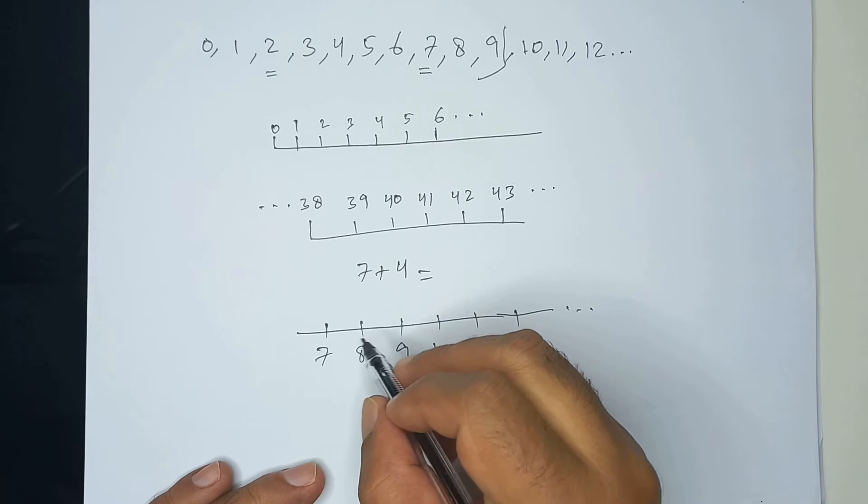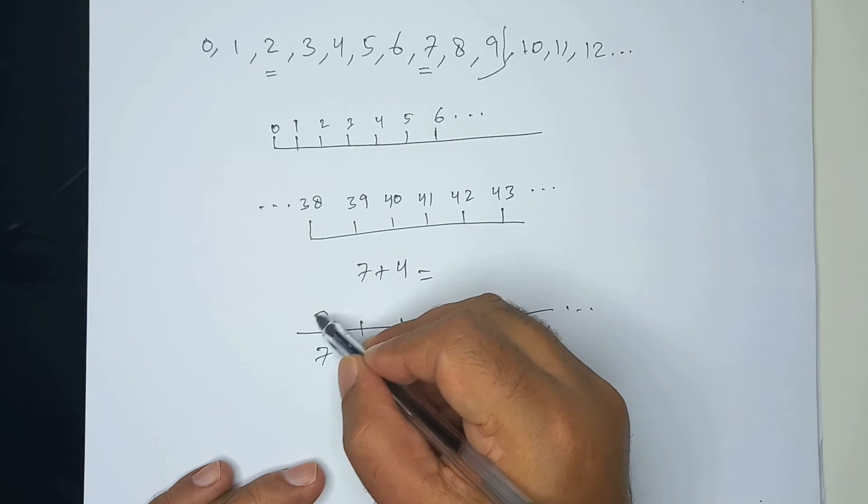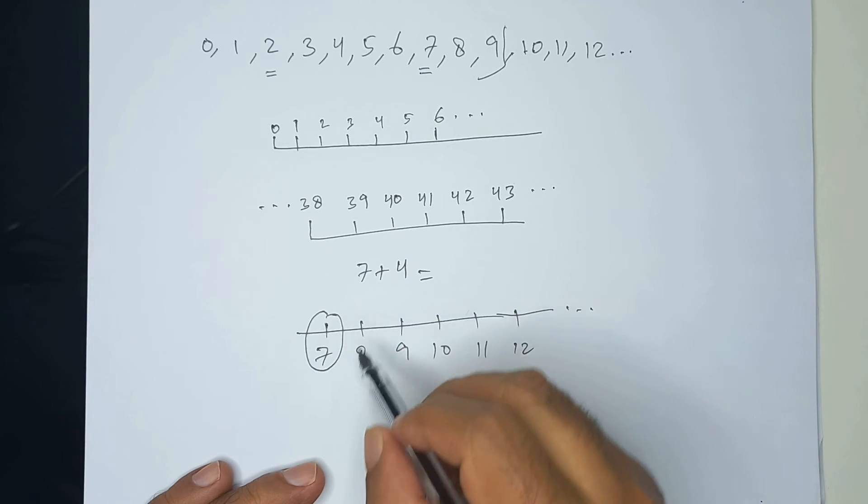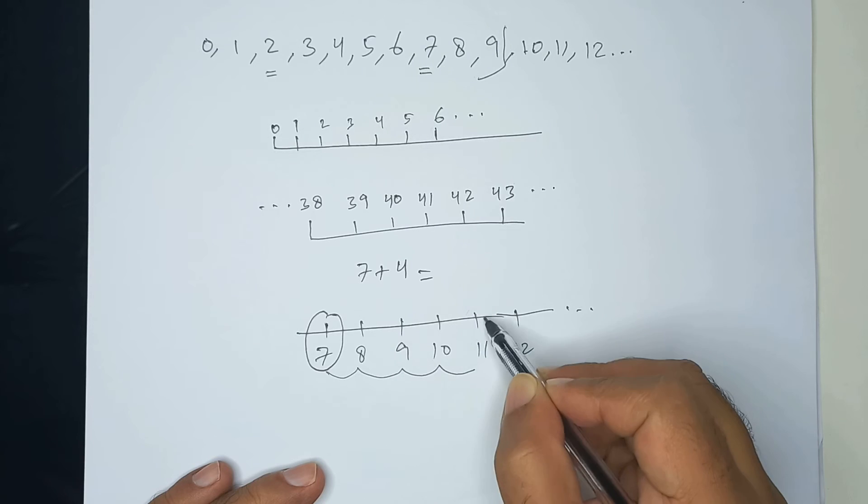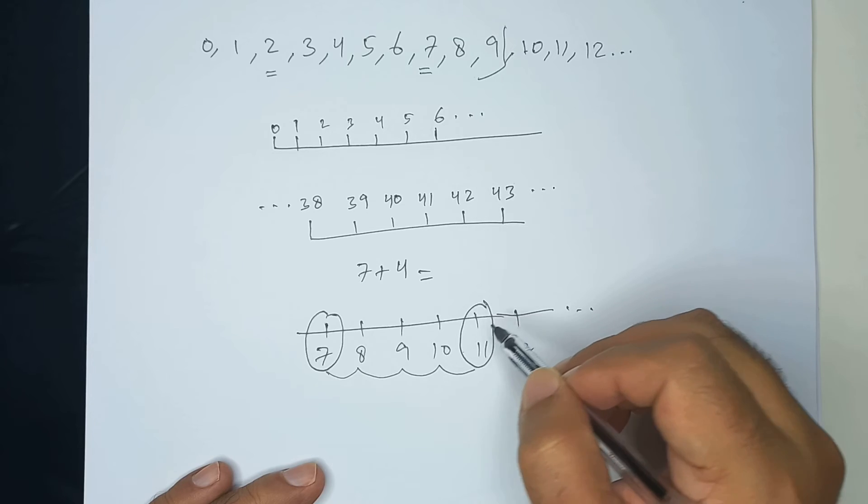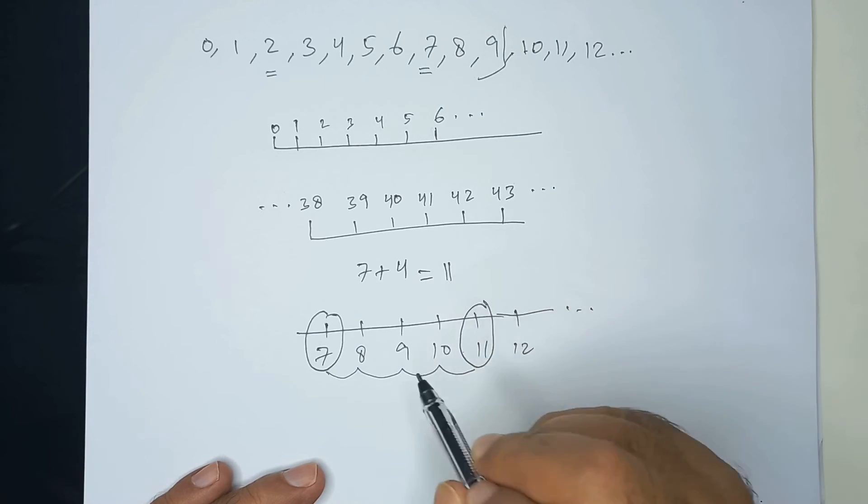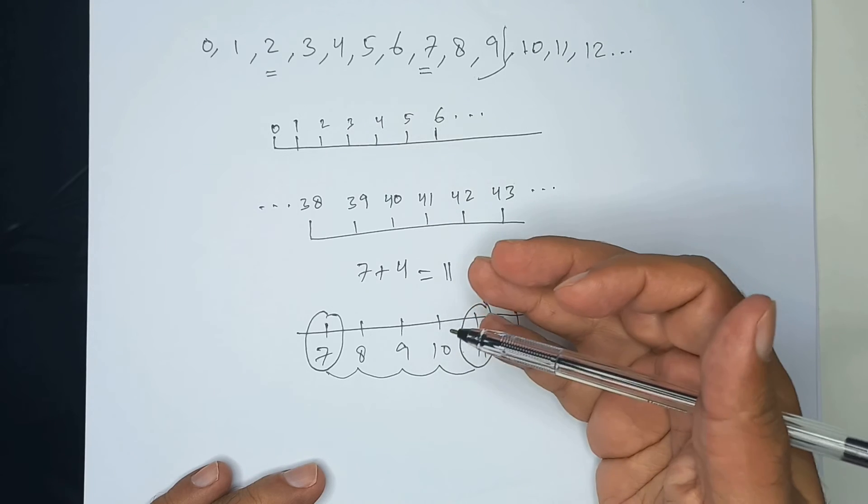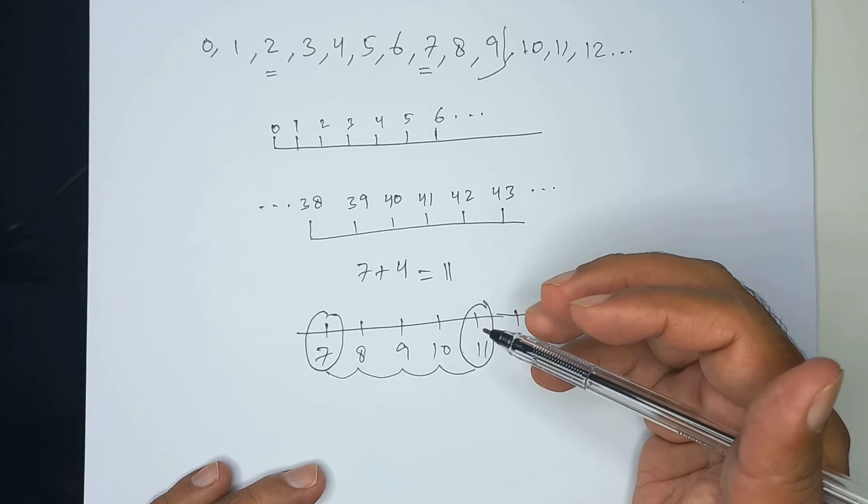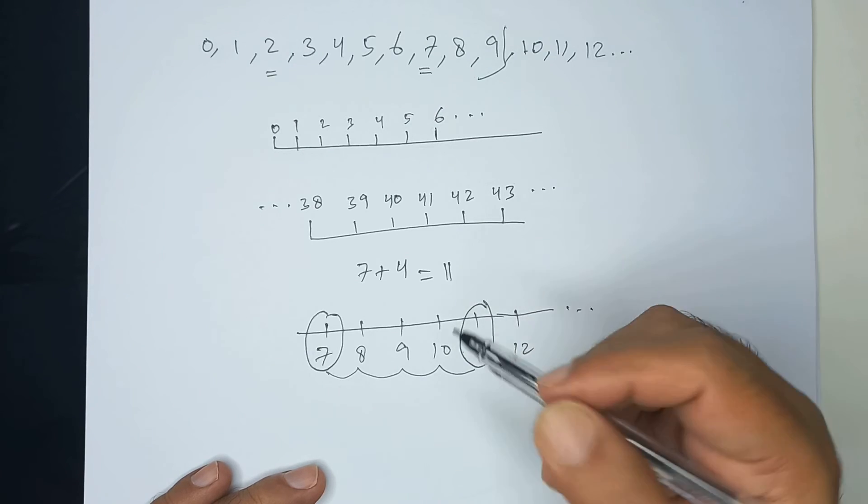We can start at 7 and count on 4 from here. So 1, 2, 3, 4, we reach 11. So this takes us to 11. So 7 plus 4 is 11. We can use this number line to help with this if we like or we can just do it in our heads.